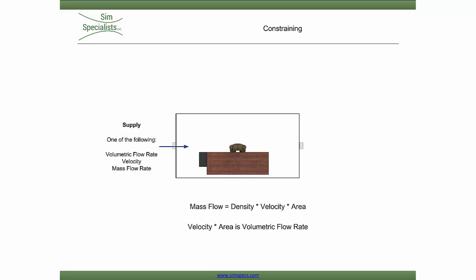This is because mass flow rate is defined as density times velocity times area, and volumetric flow rate is defined as velocity times area. Density and area are given by the simulation model and material properties.